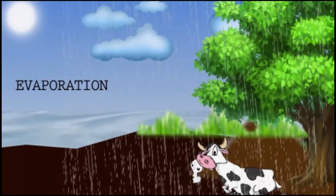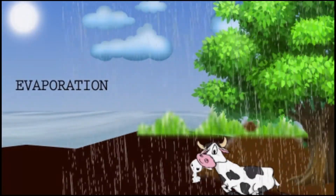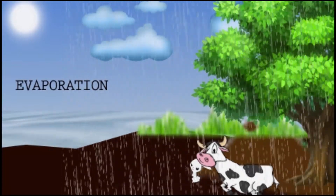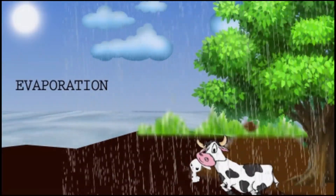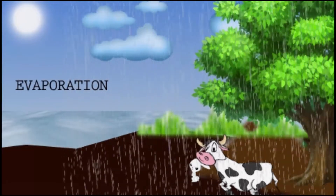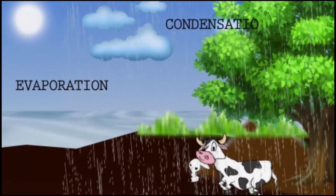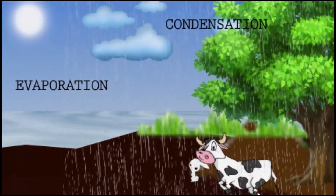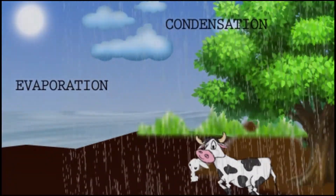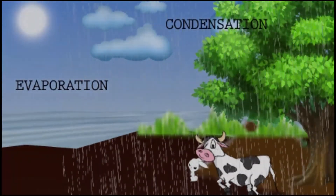Evaporation: water goes into the atmosphere as vapor or in gas form, which forms the clouds. Condensation: the water that collects as droplets turns liquid and comes down as rain, snow, or hail.